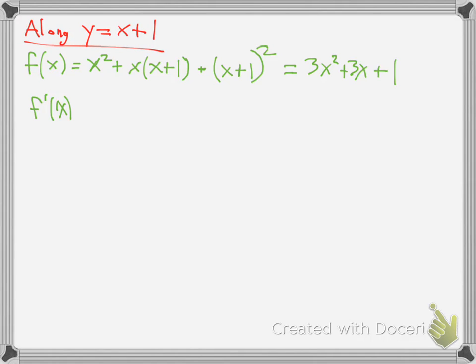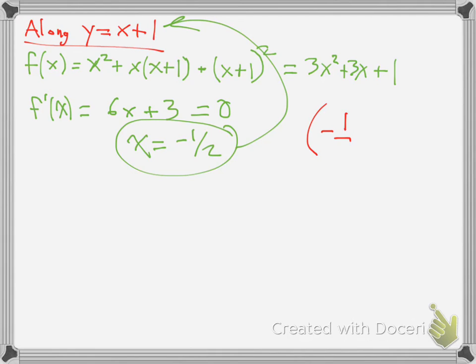The derivative of that would be 6x plus 3. Set that equal to 0. Solve for x. x equals negative 3 over 6, which is negative 1 half. Then you plug this into this equation here. You would get y equals, well, x is negative 1 half plus 1 would be positive 1 half. So your coordinate would be (-1/2, 1/2). And that is your final point here.